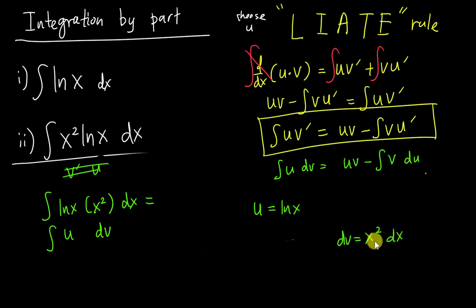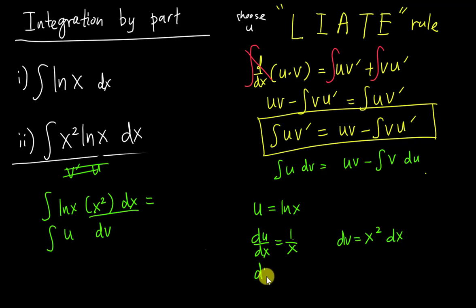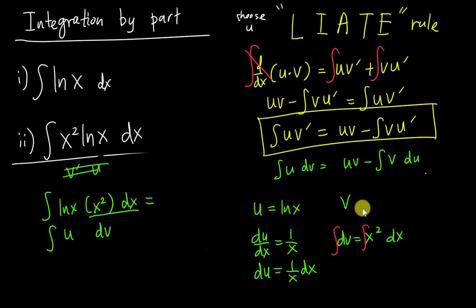Now, dv/dx = x², so integrating both sides to find v: integrating x² gives v = x³/3. For du: differentiating u = ln(x) gives du/dx = 1/x, so du = (1/x)dx.